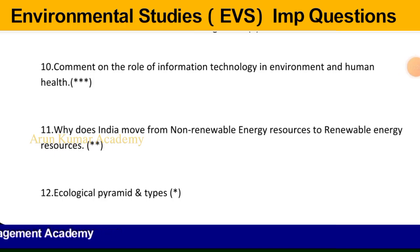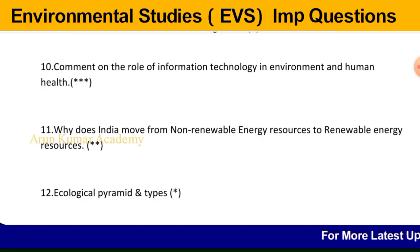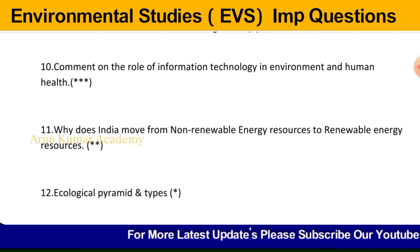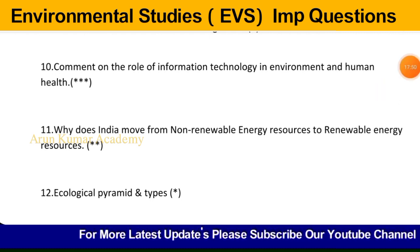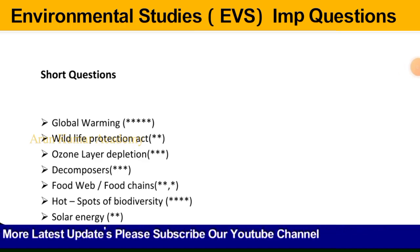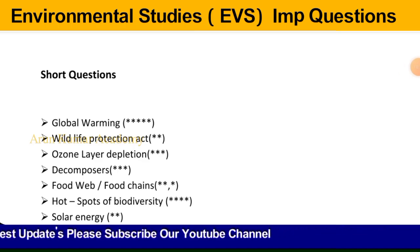Question number twelve: ecological pyramid and types. An ecological pyramid is a graphical representation of food chain levels in the form of pyramids. The three types are: pyramid of numbers, pyramid of biomass, and pyramid of energy. Write about each in detail. For short questions, you have to write a minimum of 15 to 20 lines per answer.